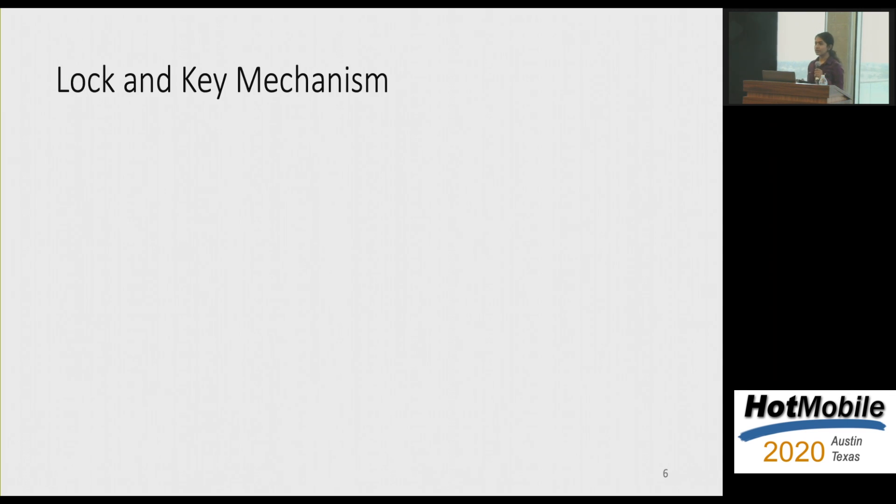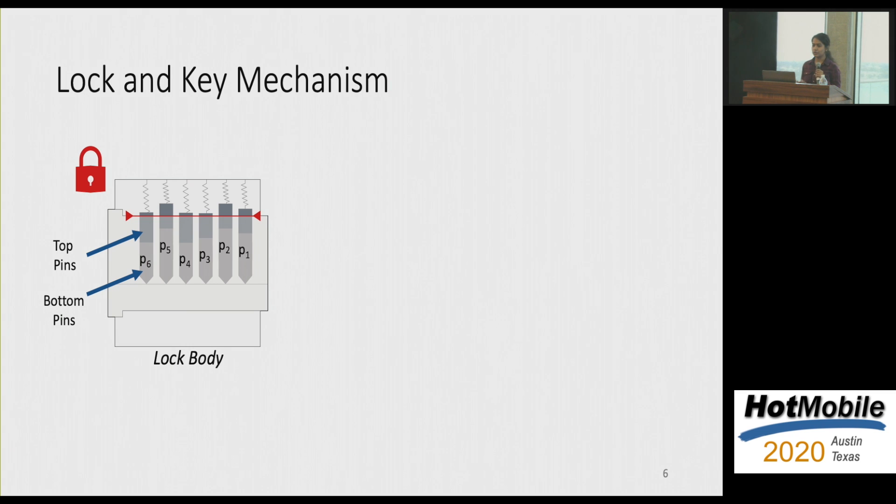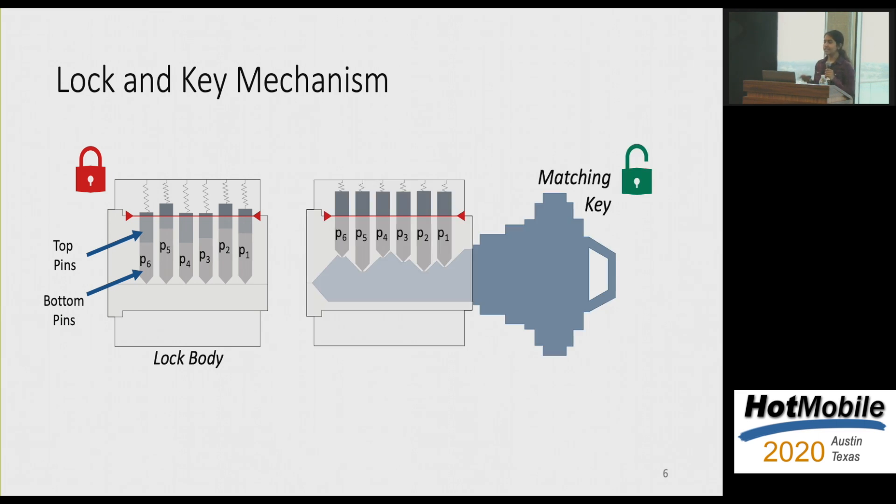So the question we try to pose is whether an attacker who is probably walking around in your corridor with a smartphone microphone and captures the sound of your key insertion, can he actually be able to infer the key bittings or the secret of this particular key? So in this talk, I'll actually be showing you that this is indeed feasible. So before we go on to our technique, I'll briefly talk to you about how the locks actually work and what's the internal components. So within every lock are these two sets of pins called top pins and bottom pins. In the locked state, the top pins are actually blocking this red line that you can see there, which prevents the lock from rotating.